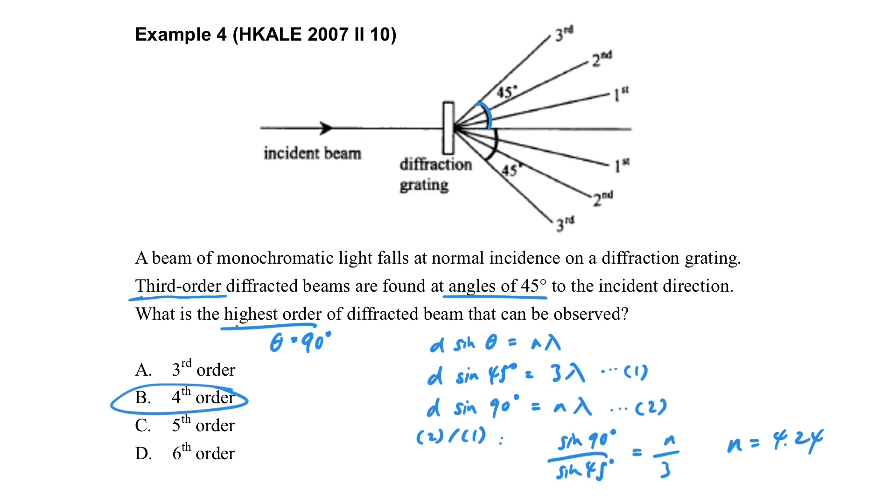Just a reminder, if we get the answer as 4.9, then what should be the answer? If we get the answer as 4.9, actually, it's still 4th order for the maximum.